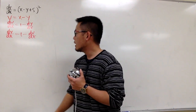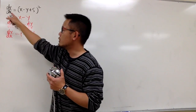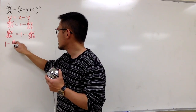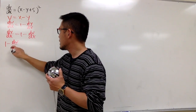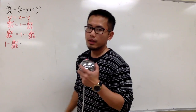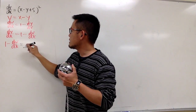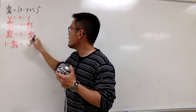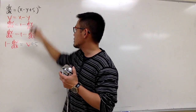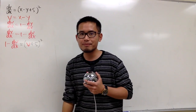Now I can plug this into the original equation. We have 1 - dv/dx = (v + 5)², where x - y has been replaced by v, and we still have the plus 5 and the square.